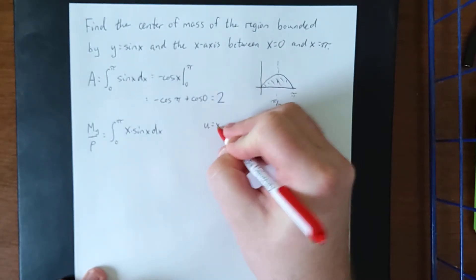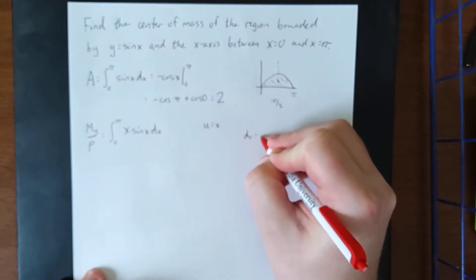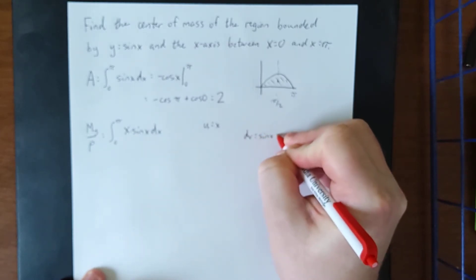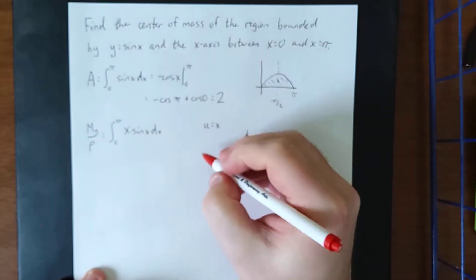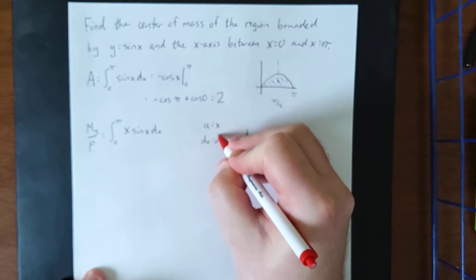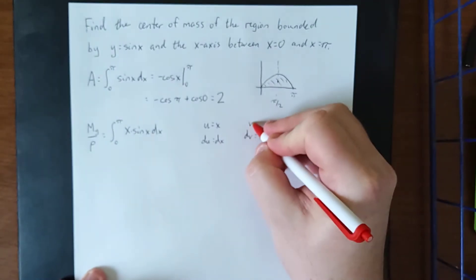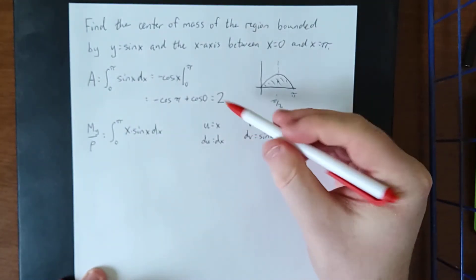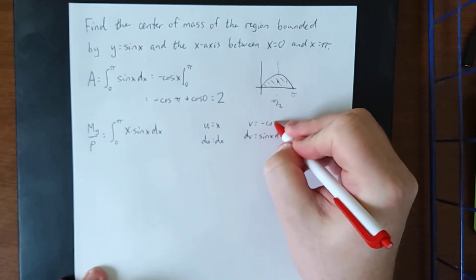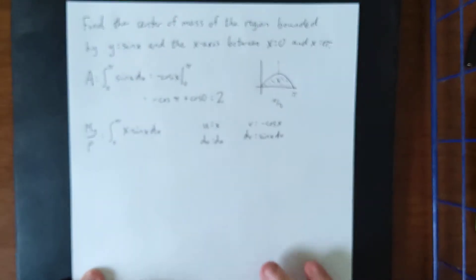As such, we'll let u be equal to x. We'll let dv be equal to everything else, the sine of x dx. Therefore, du is going to be equal to dx and v is going to be equal to the same integral as what we got on the previous problem. That'll be the negative cosine of x.